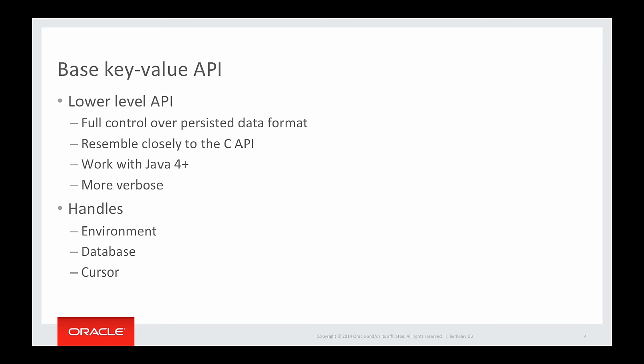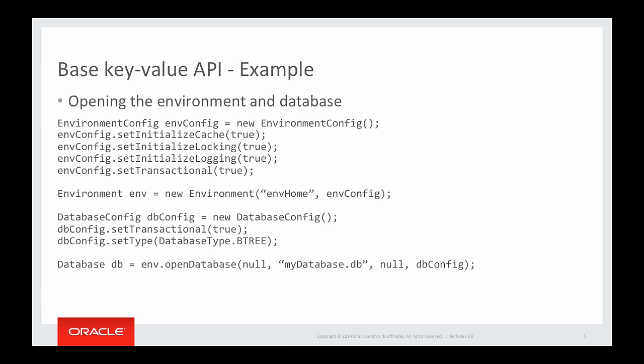Here is what it looks like to use the Key-Value API. To open the environment and the database, you first construct EnvironmentConfig and DatabaseConfig objects, setting up various configurations, and create a new environment handle and open the database handle using the configuration objects. To use a transactional database, you need to call setTransactional(true) on both EnvironmentConfig and DatabaseConfig objects.